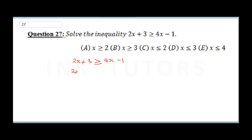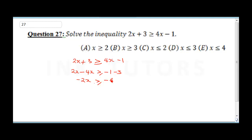Collecting like terms: 2x minus 4x is greater than or equal to minus 1 minus 3, giving minus 2x is greater than or equal to minus 4. Now divide both sides by minus 2 — remember, whenever you divide by a negative, the inequality sign changes.